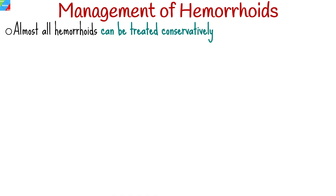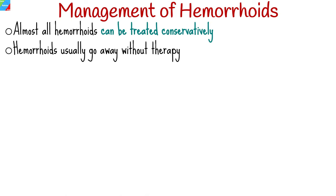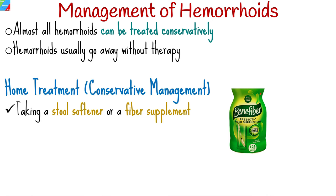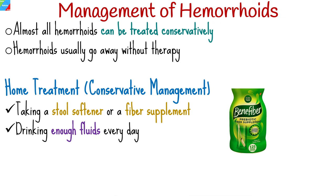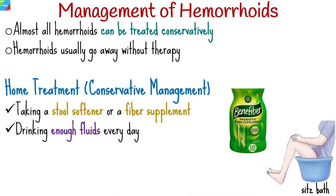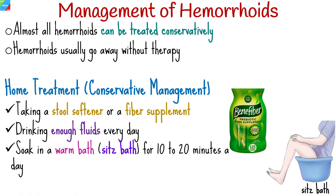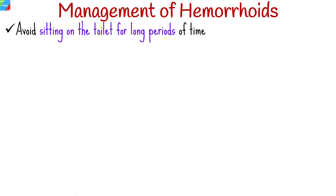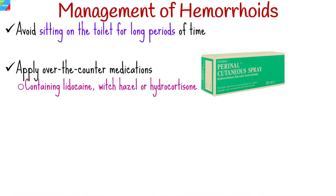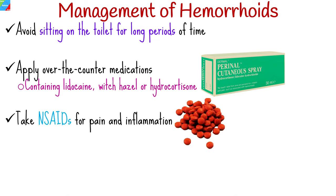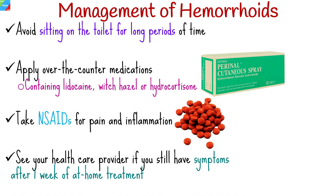Almost all hemorrhoids, especially uncomplicated ones, can be treated conservatively. Hemorrhoids usually go away without therapy. At-home treatment includes taking a stool softener or fiber supplement, drinking enough fluids every day, soaking in a warm sitz bath for 10 to 20 minutes a day, avoiding sitting on the toilet for long periods, applying over-the-counter medications containing lidocaine, witch hazel, or hydrocortisone to the affected area, and taking non-steroidal anti-inflammatory drugs for pain and inflammation. See your doctor if symptoms persist after one week, if you have rectal bleeding, or if symptoms worsen.